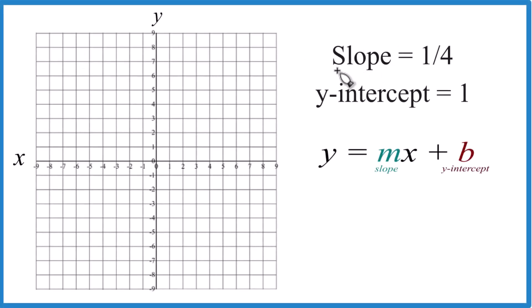If you need to graph the line where you have the slope of one-fourth and the y-intercept is one, here's how you do it.